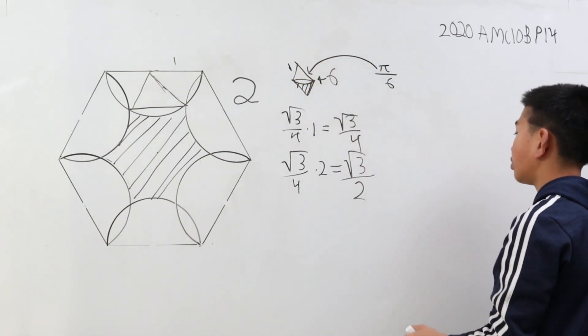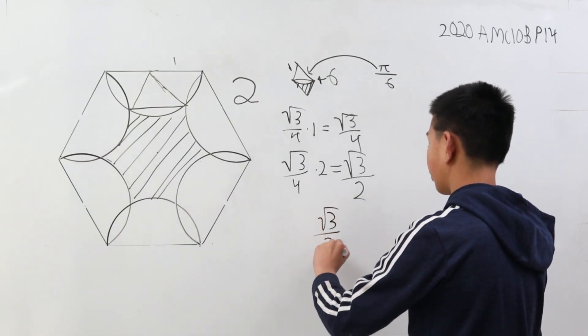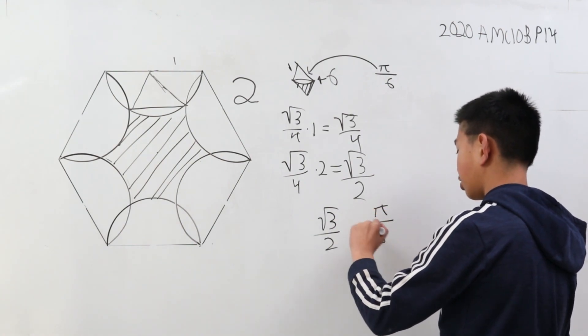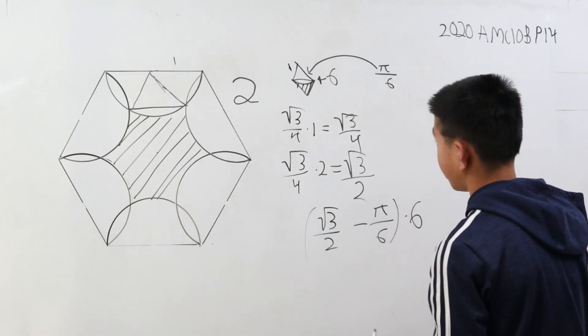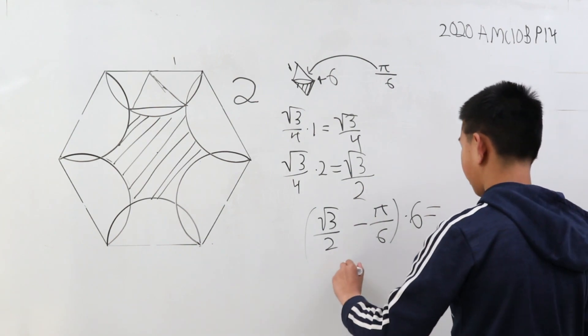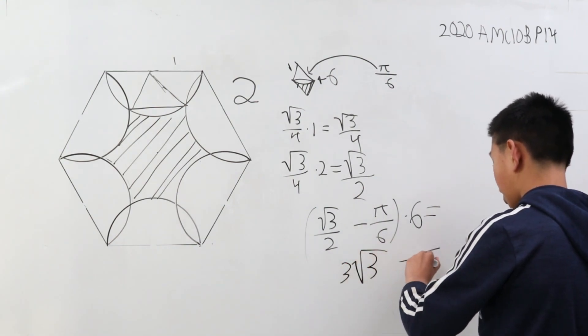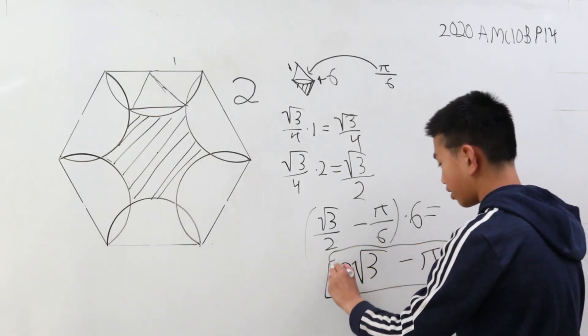We can therefore find the shaded region. This is going to be the total area, root three over two, minus pi over six, times six because there's six of these. This is going to yield our final answer of three times the square root of three minus pi. That is our final answer, we are done.